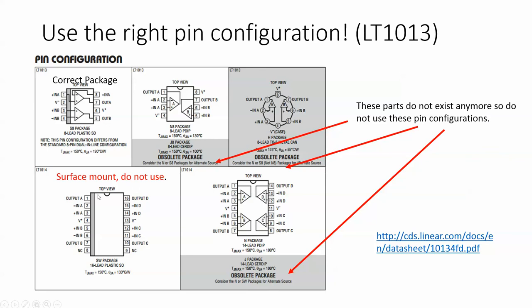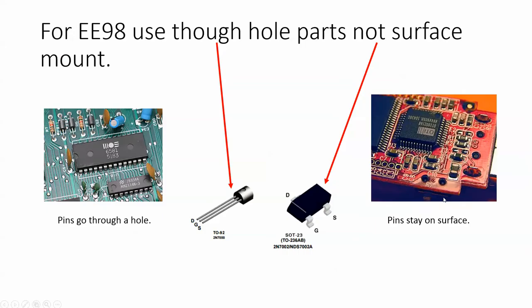This happens to be surface mount and it also has four op amps on it. Notice LT1014—it might not be surface mount, but still it's the wrong part. For EE98, use through-hole parts, not surface mount parts.